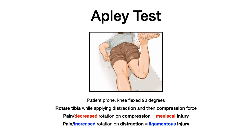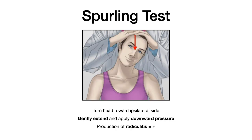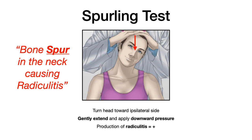The Spurling test is testing for radiculitis. The patient turns their head toward the ipsilateral side, and the physician gently extends the neck slightly and applies downward pressure. If radiculitis symptoms are produced, that's a positive Spurling test. The mnemonic: 'Spurling' reminds you of 'bone spur' in the neck, which causes radiculitis.